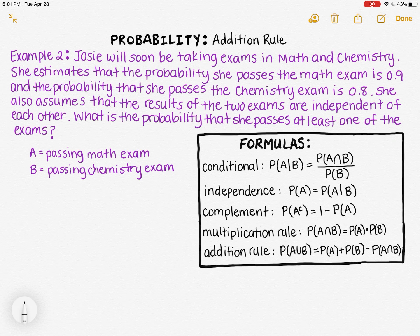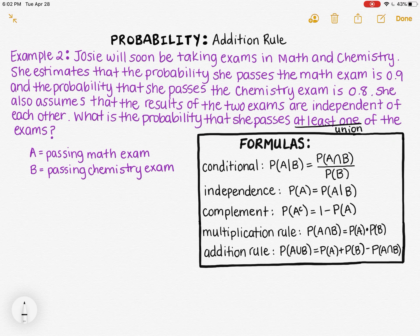Now I'm going to show you an example where you use this for probability. Josie will soon be taking exams in math and chemistry. She estimates that the probability she passes the math exam is 0.9, and the probability that she passes the chemistry exam is 0.8. She also assumes the results of the two exams are independent of each other. What is the probability that she passes at least one of the exams? The phrase 'at least one' tells me we're looking for the union, since the union finds the probability that at least one event is true. Event A is passing the math exam, and event B is passing the chemistry exam.